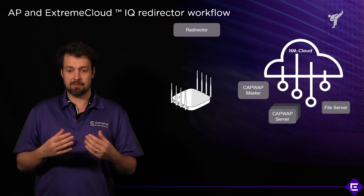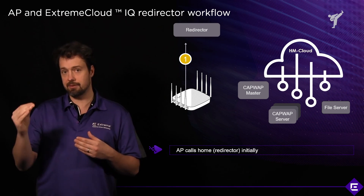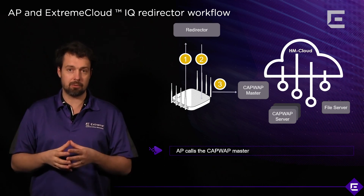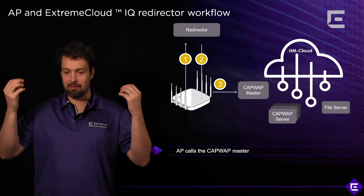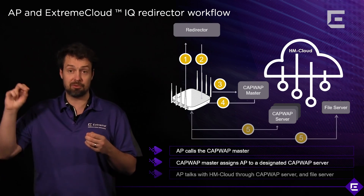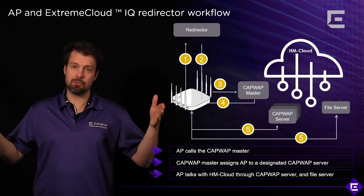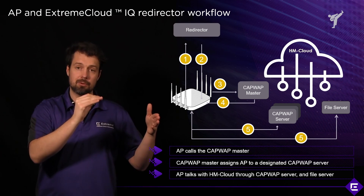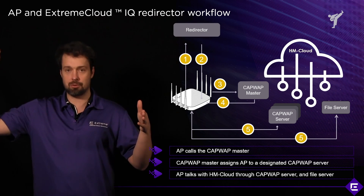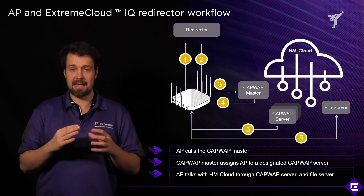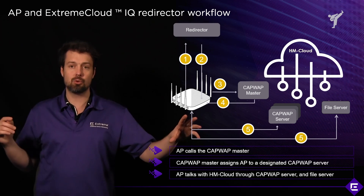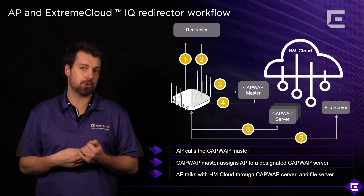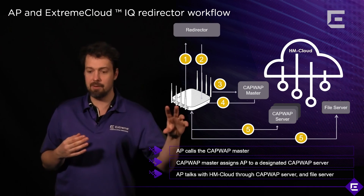The access point gets its IP settings, starts talking to the redirector, finds out where it needs to go in terms of RDCs and VIQ instances, and then attaches itself to something we call a CapWeb server. Each RDC has CapWeb master servers, which further redirect the AP to the actual CapWeb server that will terminate the CapWeb tunnel. That tunnel is used for two things: pushing configuration from Extreme Cloud IQ down to the AP, and sending monitoring data from the AP up to the Extreme Cloud IQ instance — so it's a bi-directional communication. The tunnel is established from the direction of the access point to the Extreme Cloud IQ instance, which makes it very simple to traverse NAT and firewalls. The AP is the one that establishes this communication and this tunnel.